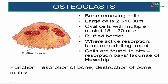Osteoclasts are bone-removing cells. They are very large, ranging from 100 to 200 microns, and are large oval cells with multiple nuclei — almost 15 to 20 or more. They have one border which is very irregular, called the ruffled border. They are present where active resorption, bone remodeling, or repair is happening, found in pits called resorption bays — the lacunae of Howship. Their function is resorption and destruction of the bone matrix.